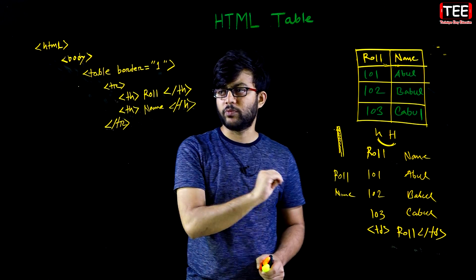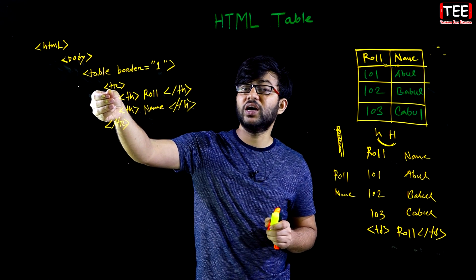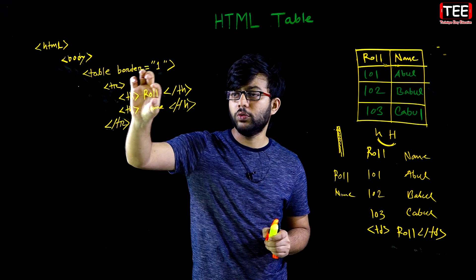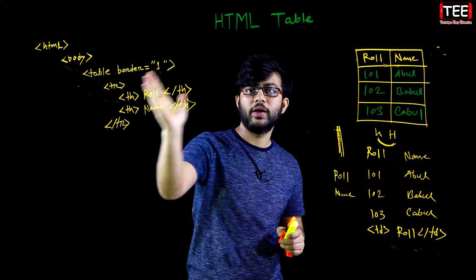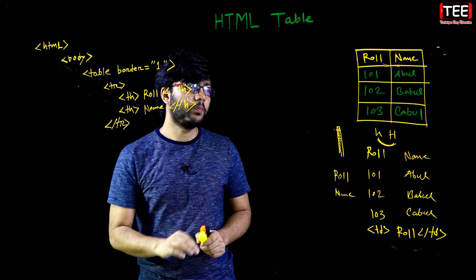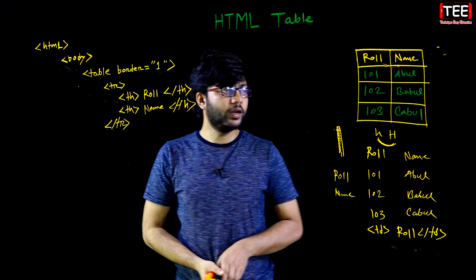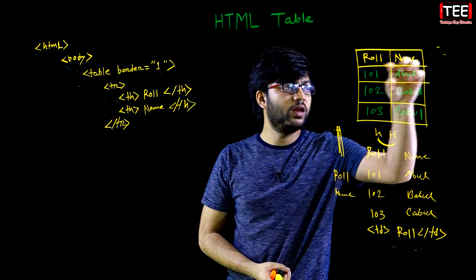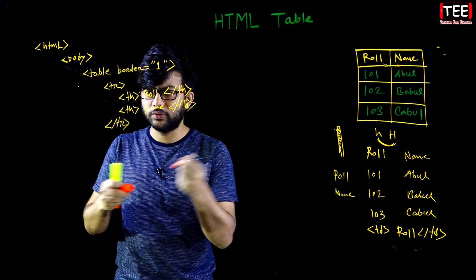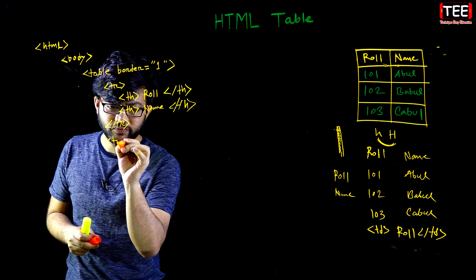What does the output mean? When you write it, it is called TR — this is the table row. This is the table row, that's complete. Next step: this is the table row. You start the table row.